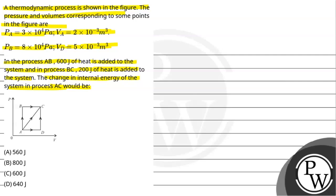So here we have a thermodynamic process cycle with points A, B, C, and D. We can see point A and point B with pressure given, and volume at each point.